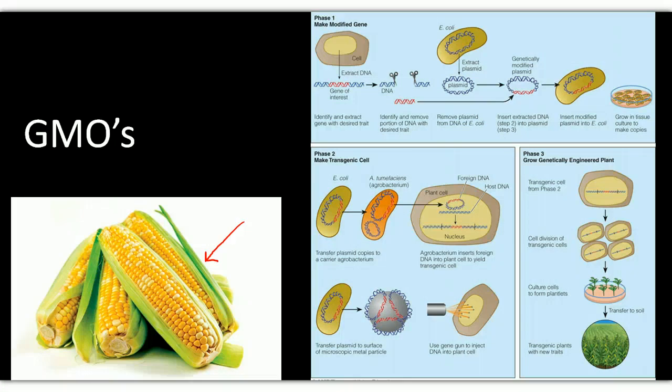So there's a company out there called Monsanto, I believe, which is actually a pesticide company. And they developed a corn that is able to withstand pesticides, Roundup.